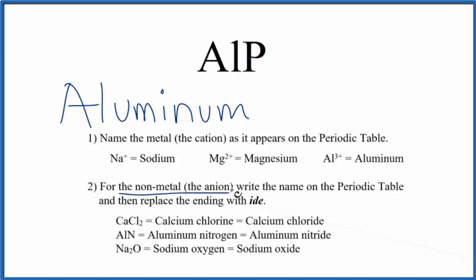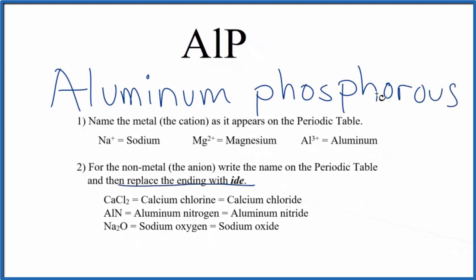Next we'll write the name for the nonmetal, also as it appears on the periodic table. So we'll start with a lowercase p for phosphorus, and then we'll replace the ending with IDE.